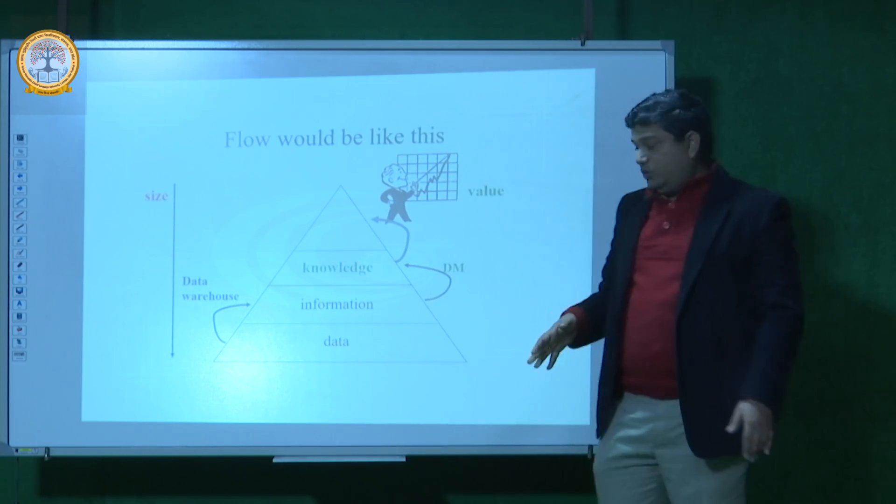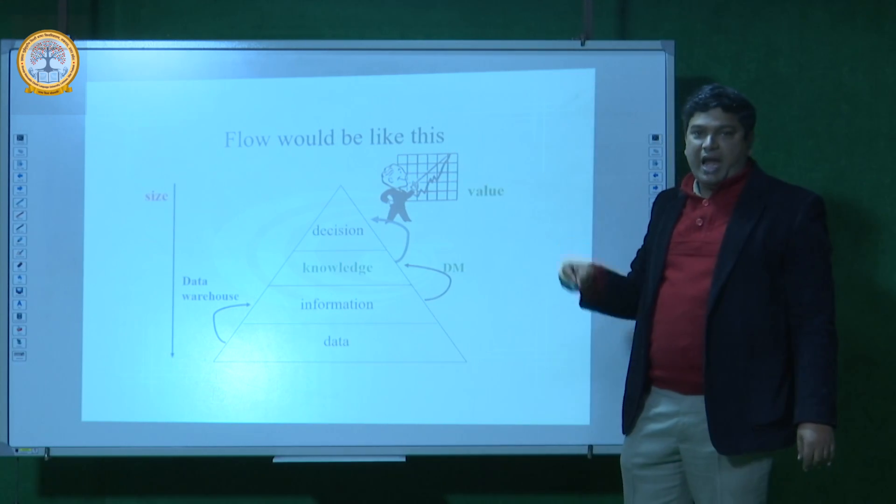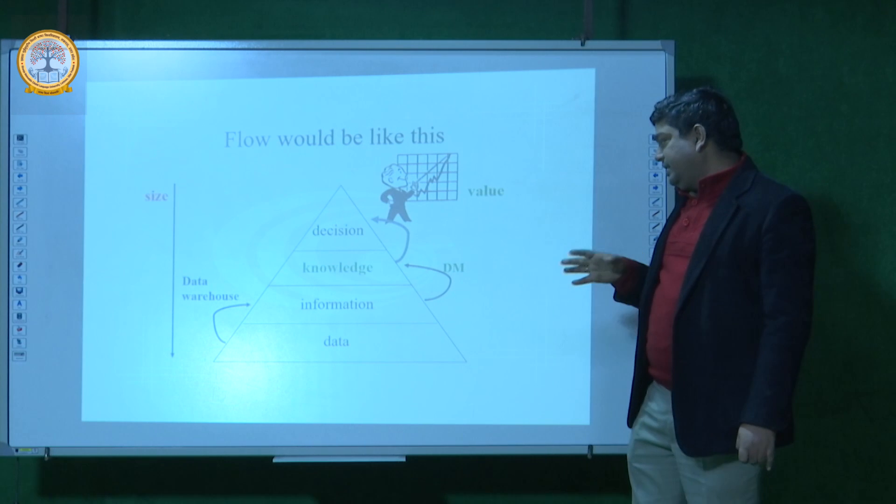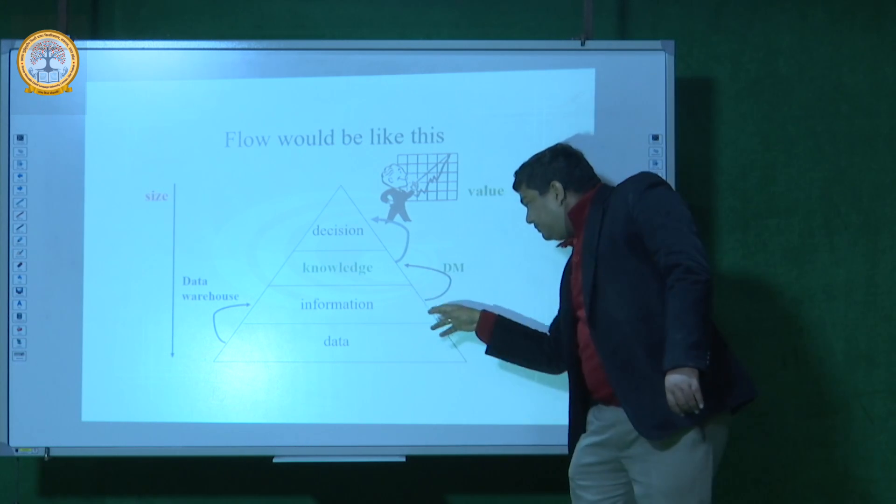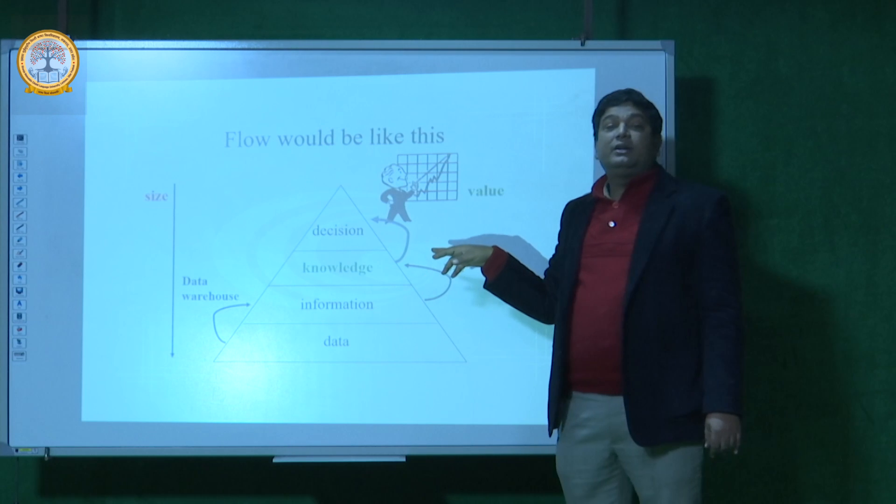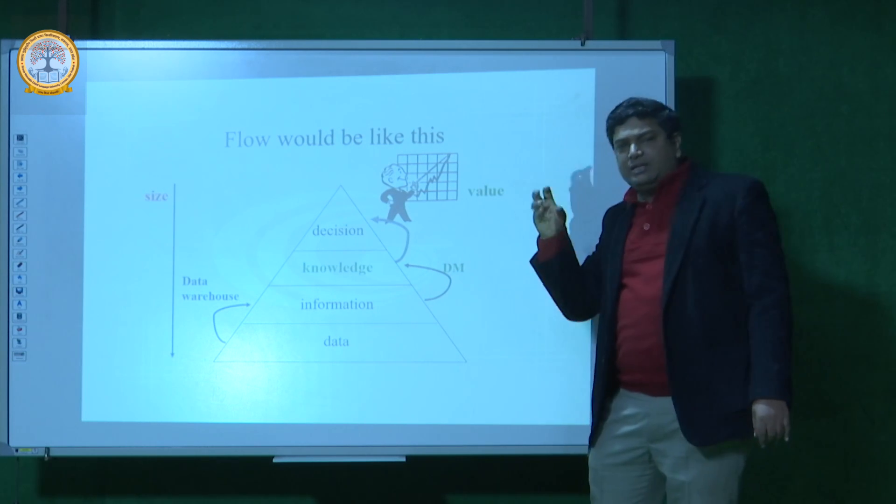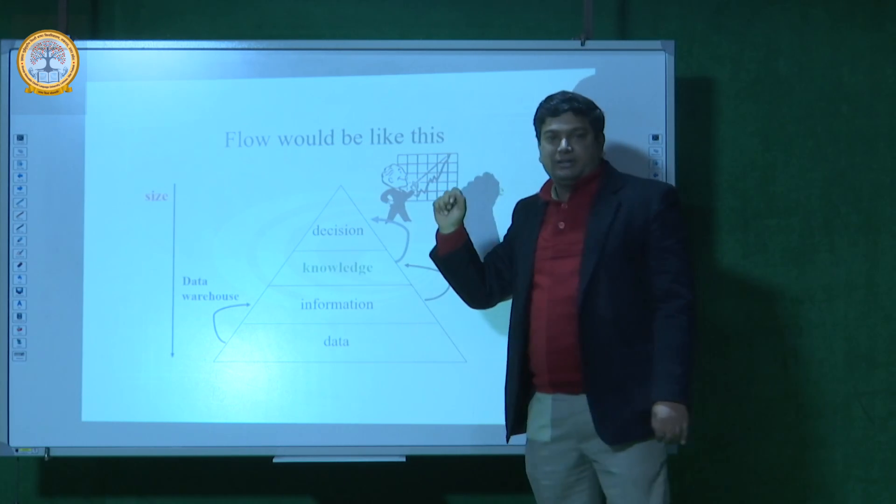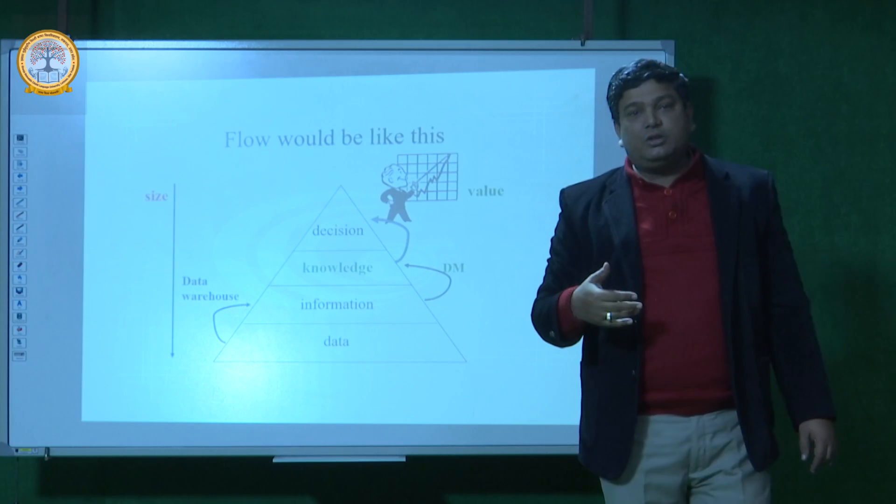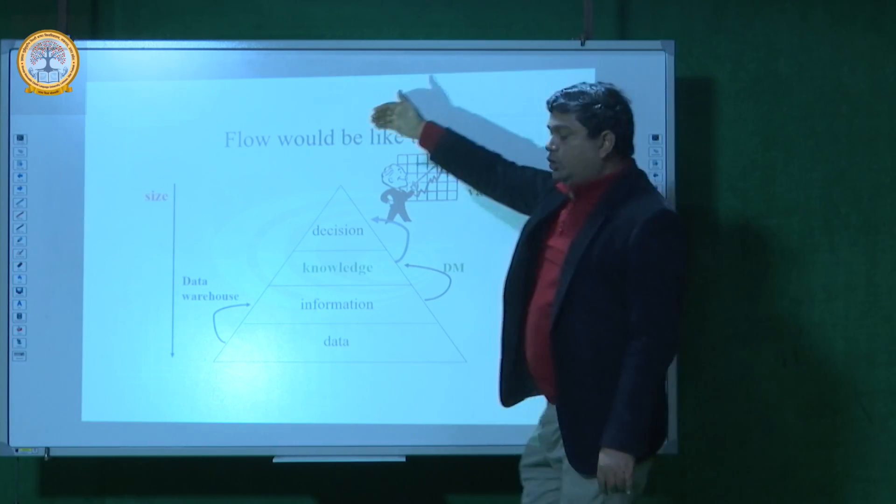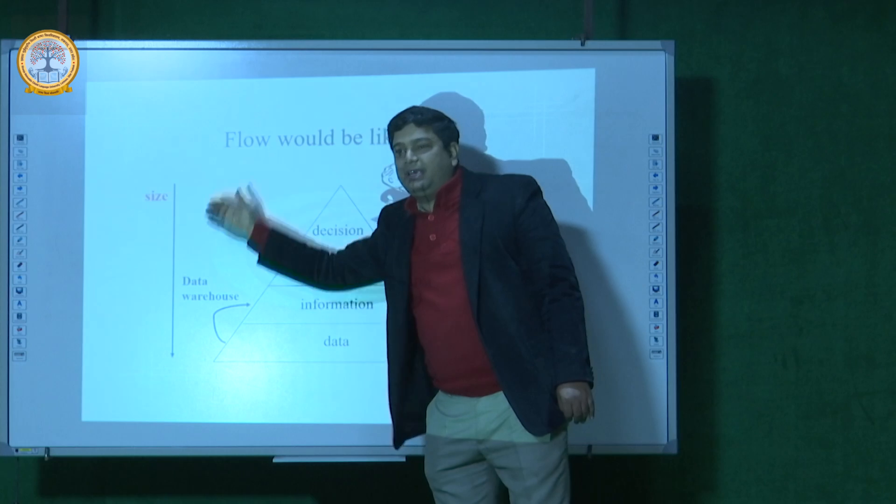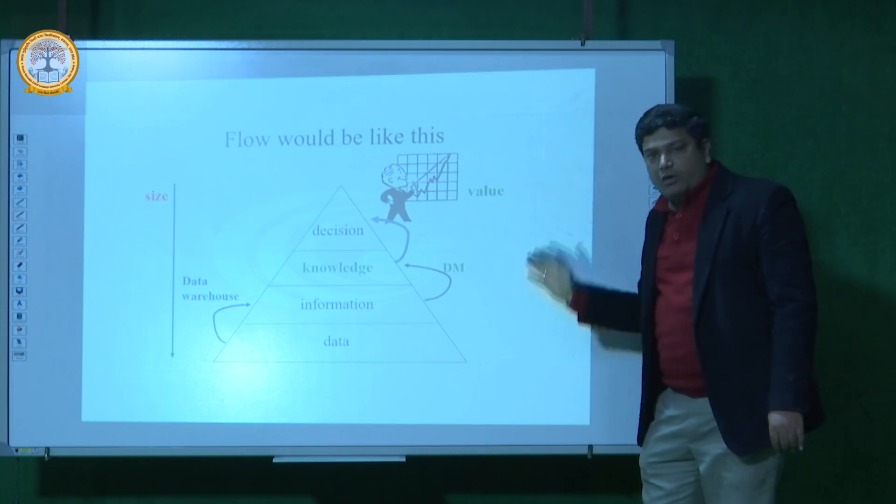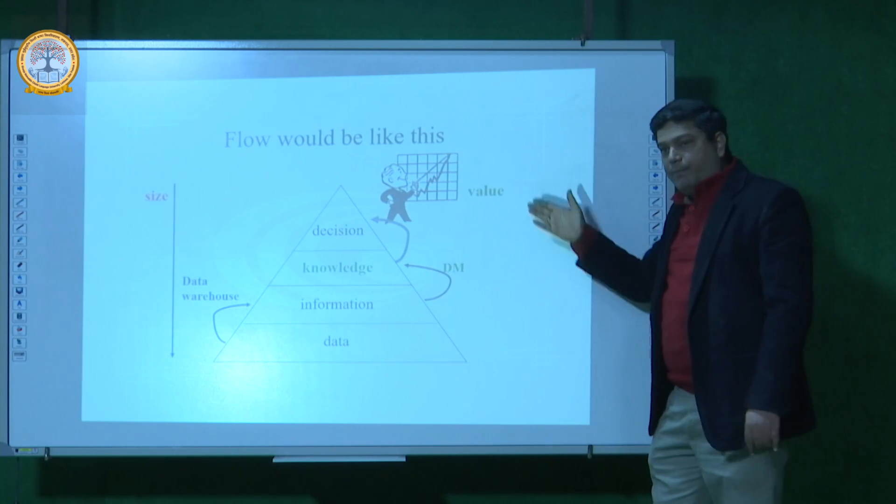Next, information converted into knowledge is called data mining. It is a process. Next is decision, and based on the knowledge you take the decision. So the knowledge is called the model. Top to bottom approach increases the size of the value volumes. But value always increases bottom to top. Bottom to top approach follows the value of any information.